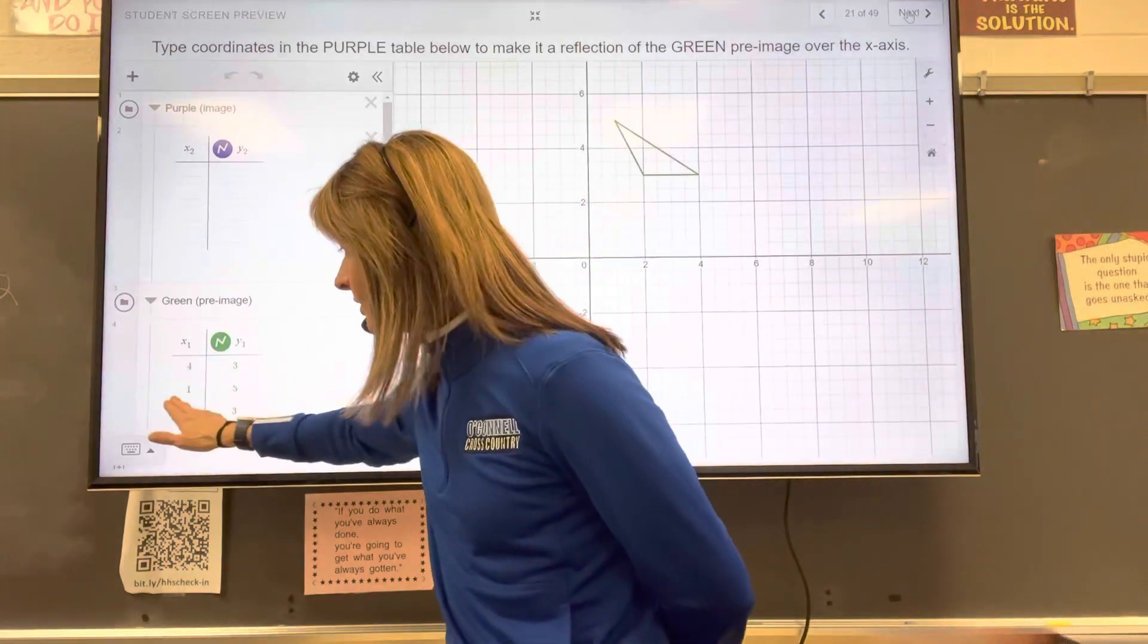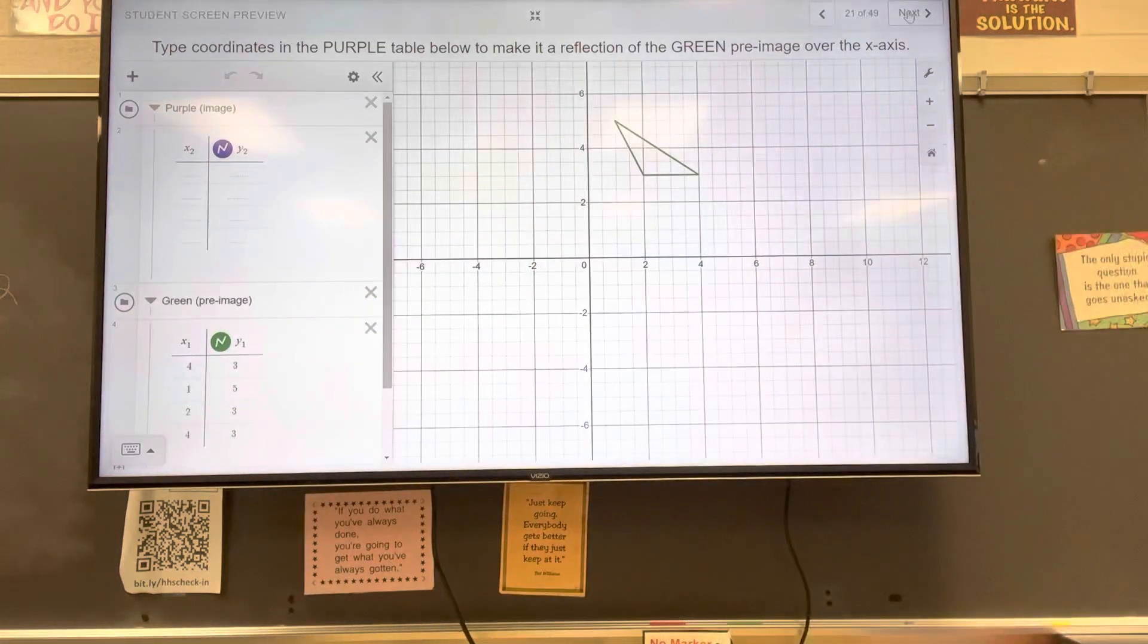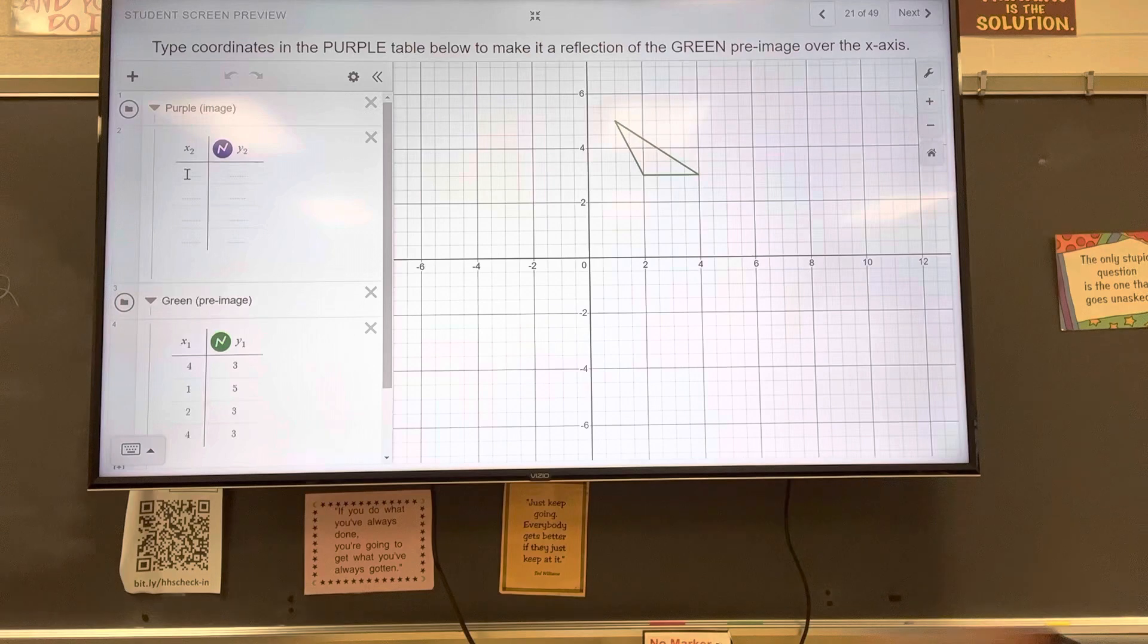So the x-coordinates are still 4, 1, 2, 4. So I'm just going to type those in. 4, 1, 2, 4. And I'm going to change the signs of all the y-values.